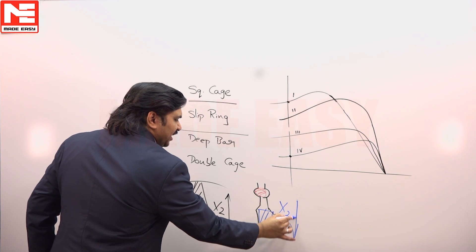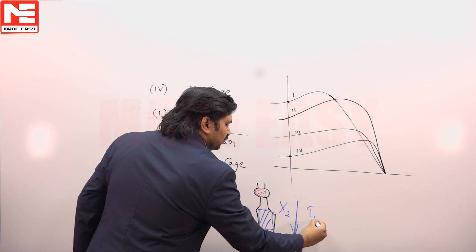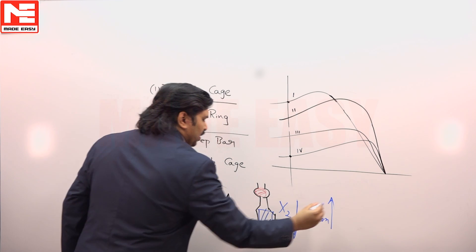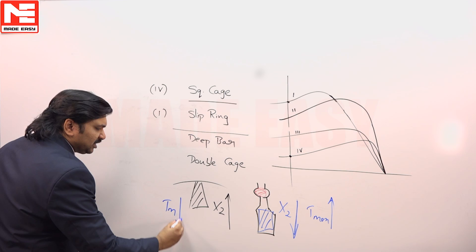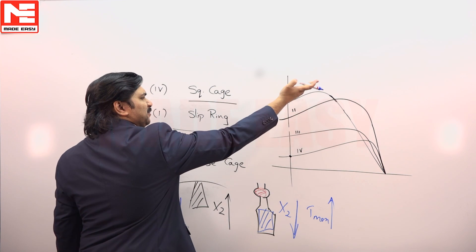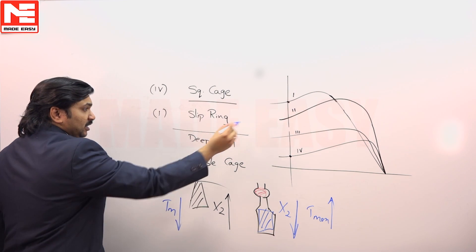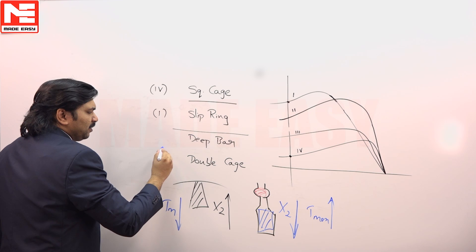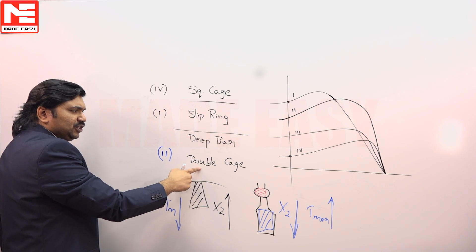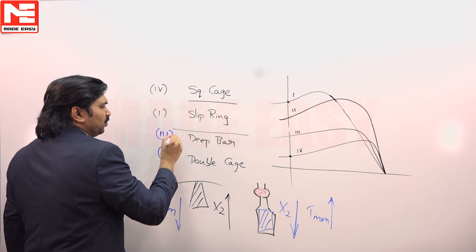So if low X2 means, definitely its maximum torque is more. High X2 means maximum torque is less, because T max is inversely proportional to X2. So in these two, which has a better maximum? Deep bar. So second one belong to double cage. Second one belong to double cage. And third, third one belong to deep bar.